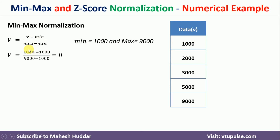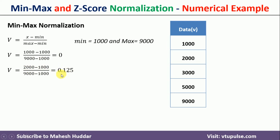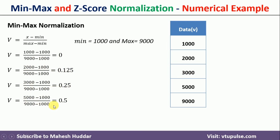If I put 1000 as x along with min and max in this equation, I will get zero — that is the minimum value, so 1000 gives zero. In the second iteration, I put x as 2000 and I get 0.125. In the third iteration, I put 3000 and get 0.25. In the fourth iteration, I put 5000 and get 0.5.